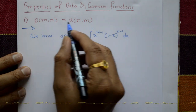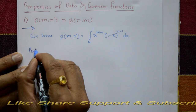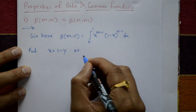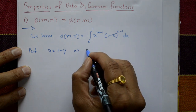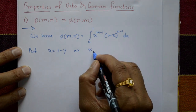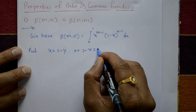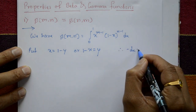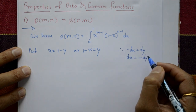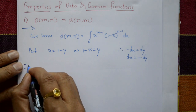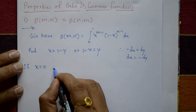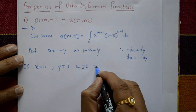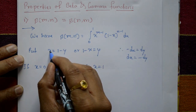To prove beta(m,n) equals beta(n,m), we use substitution. Put 1 minus x equal to y, then differentiate: minus dx equals dy, so dx equals minus dy. Changing limits: when x equals 0, y equals 1; and when x equals 1, y equals 0.